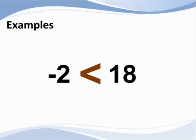Let's look at a few examples to confirm our understanding of this concept. Suppose we want to compare negative 2 to positive 18. Since negative 2 is farther to the left on the number line than 18, we would use the comparative sign to show that negative 2 is smaller. The arrow points to negative 2. We read this as negative 2 is smaller than 18.